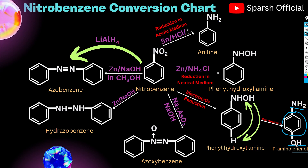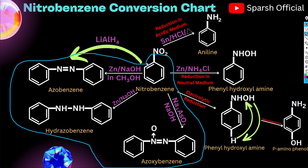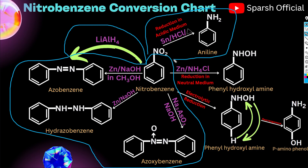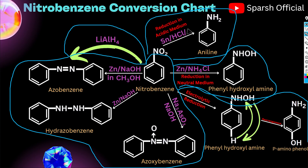Phenol and para-position have an amino group — that's why it's called aminophenol. There is a rearrangement involved here. This was the chart: reduction in alkaline medium of nitrobenzene, reduction in acidic medium, reduction in neutral medium, and lastly electrolytic reduction. There is a high chance this will appear in exams, so remember the full chart.